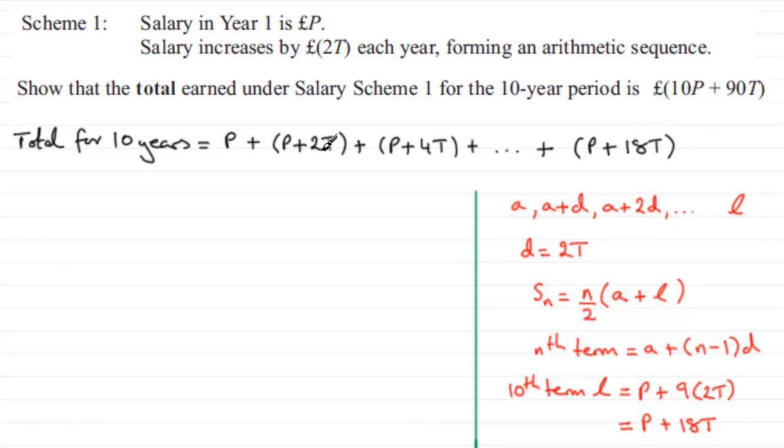So we need to sum this series up. There's 10 terms there. It's an arithmetic series, so we can say that it's the same as the sum of the first 10 terms, S₁₀. And we've seen here that Sₙ is n over 2 multiplied by the first term plus the last term.